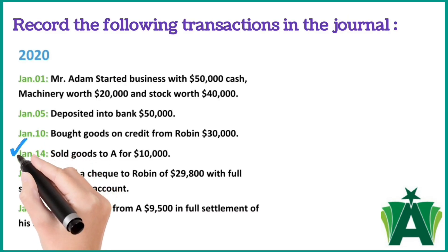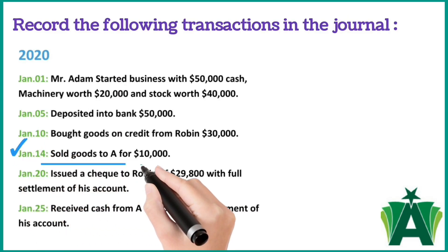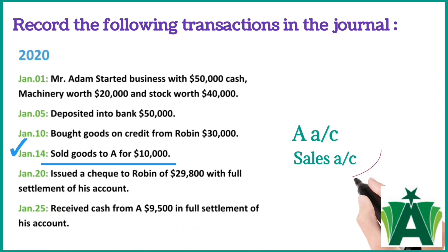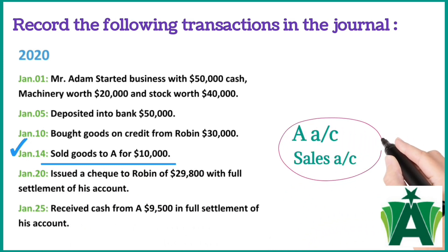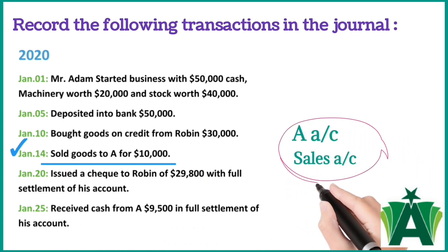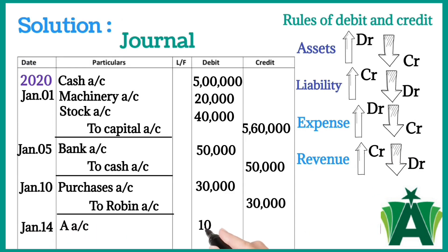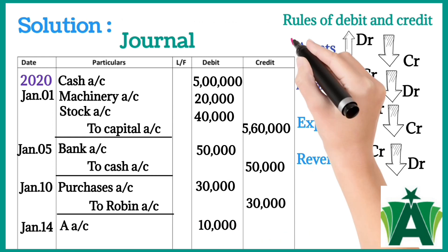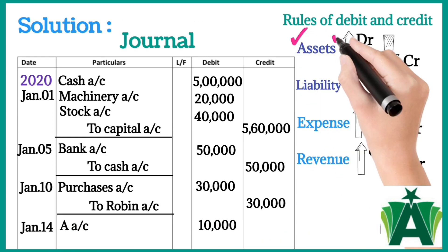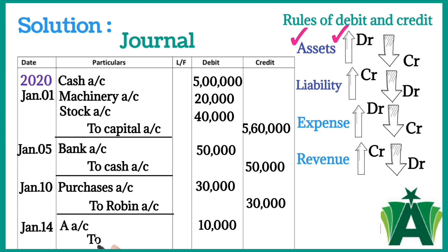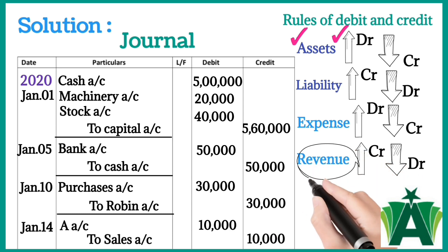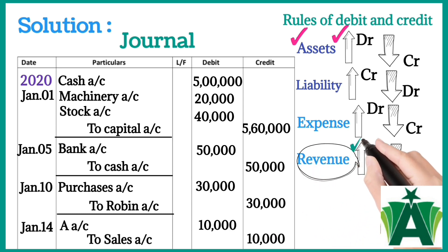January 14: Sold goods to A for $10,000. In this transaction two accounts are involved: A account and sales account. A account debit with $10,000 — reason: A is a debtor and its nature is an asset, increases in business. To sales account credit with the same amount — reason: sales account is a revenue and increases in business.